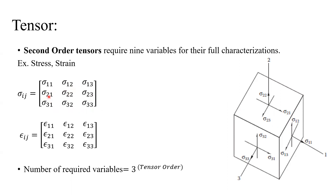For stresses, we have symmetry: sigma 1,2 and sigma 2,1 are the same; sigma 1,3 and sigma 3,1 are the same; sigma 2,3 and sigma 3,2 are the same. So technically we do not need nine components for stresses — we only need six. But in a general case it's a 3×3 matrix. Writing stresses in matrix form has the advantage that we can easily find the principal stresses, which are the eigenvalues of this matrix.